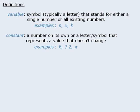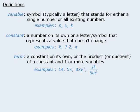The next word is constant. This is either a number on its own, or a letter or symbol that represents a value that does not change. Some examples include 6, 7.2, and pi. Next we have term. This can be a constant on its own, or it can be the product or quotient of a constant and one or more variables. Some examples include 14, 5x, 8xy cubed, and so on.